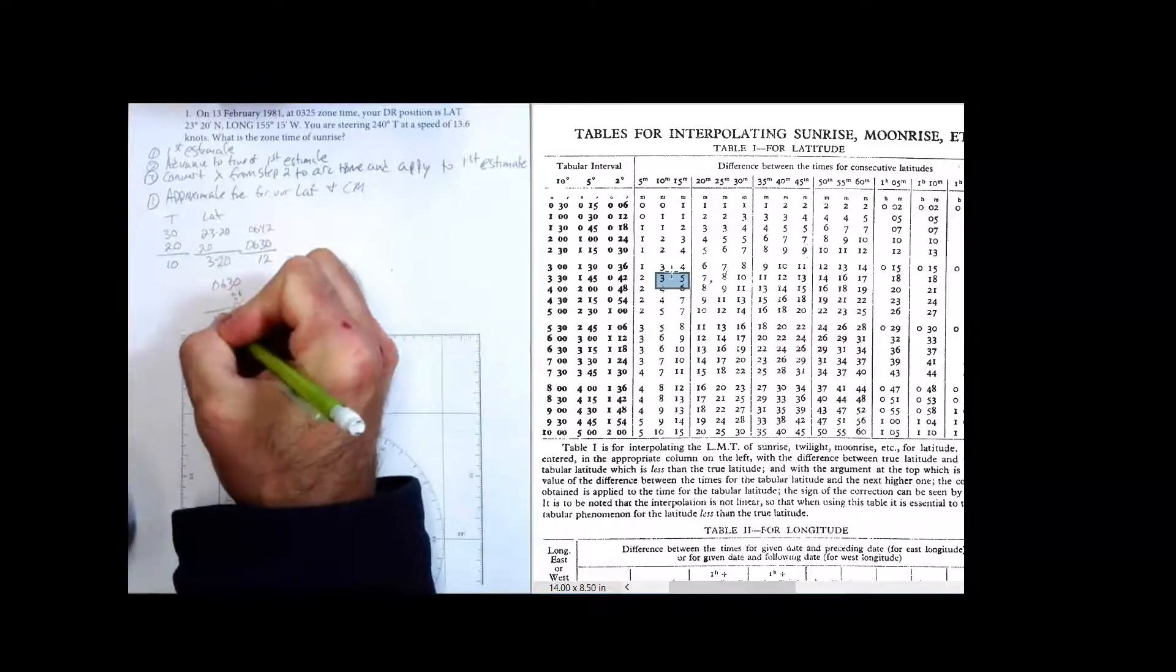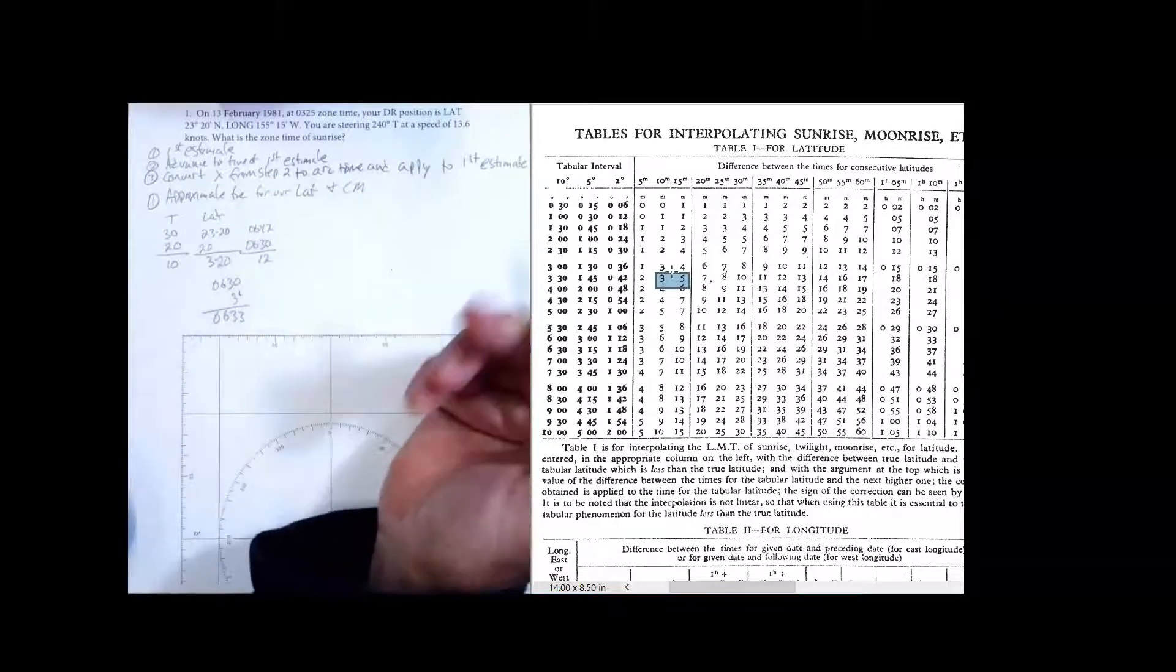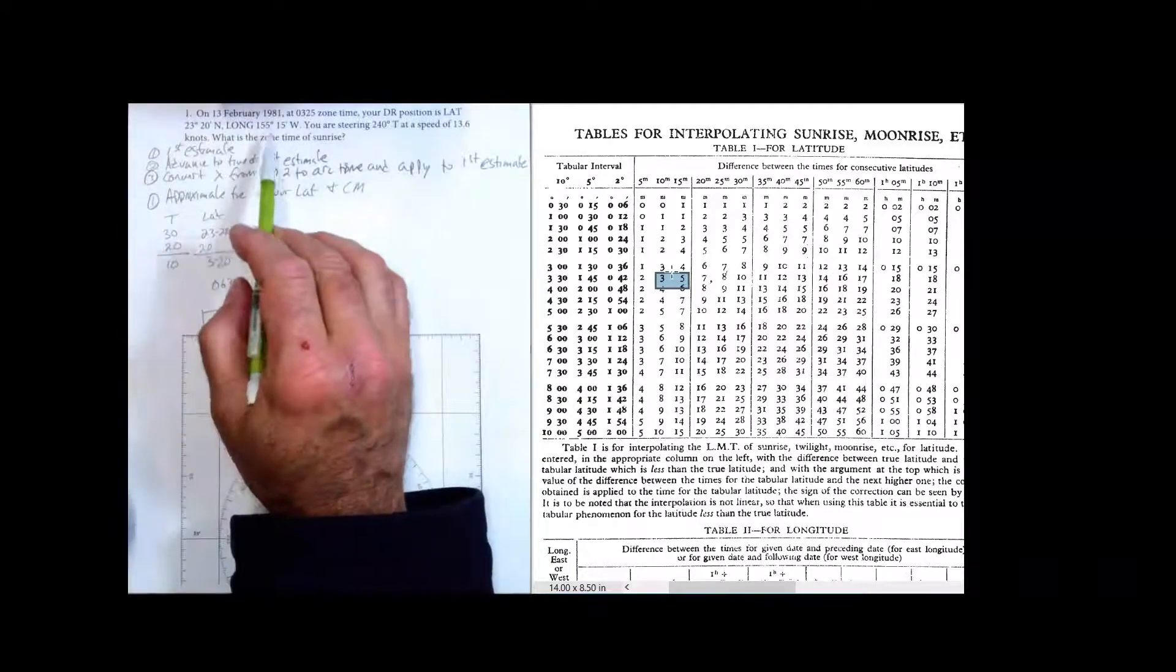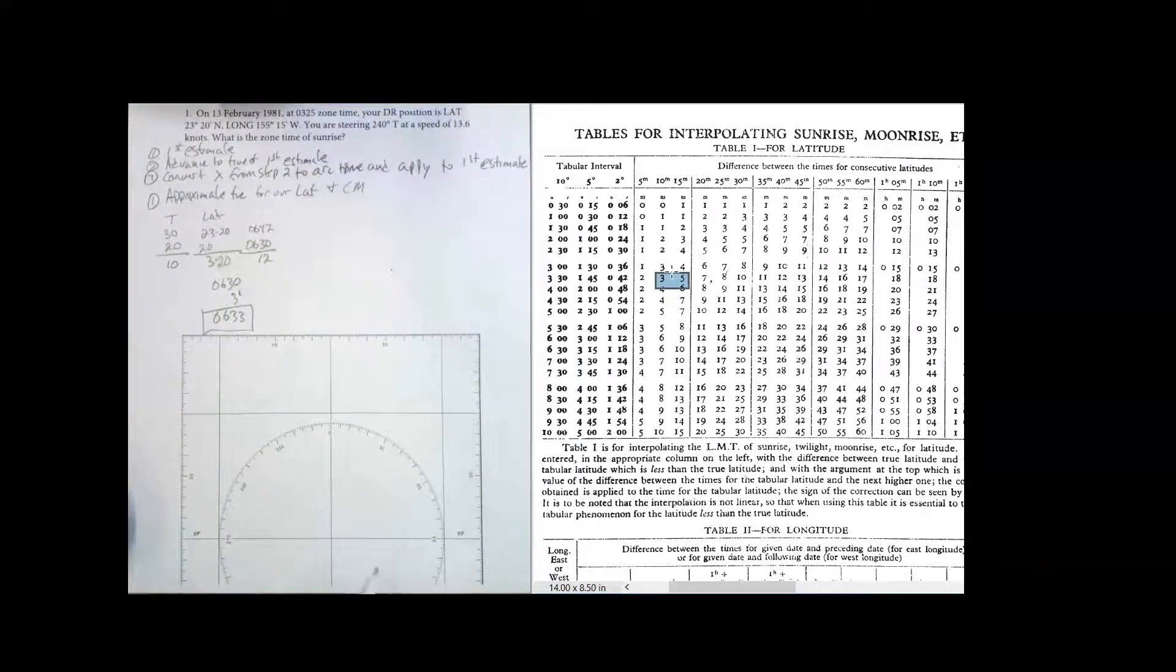So now what am I going to do with that? So my correction from this table is 3 minutes. I'm going to apply that to the time of the lower latitude, 0630, and I get 0633. Now, by eyeball earlier, we had said 0634. It's basically the same number. That's our first estimate. That is going to be for our latitude and our central meridian.